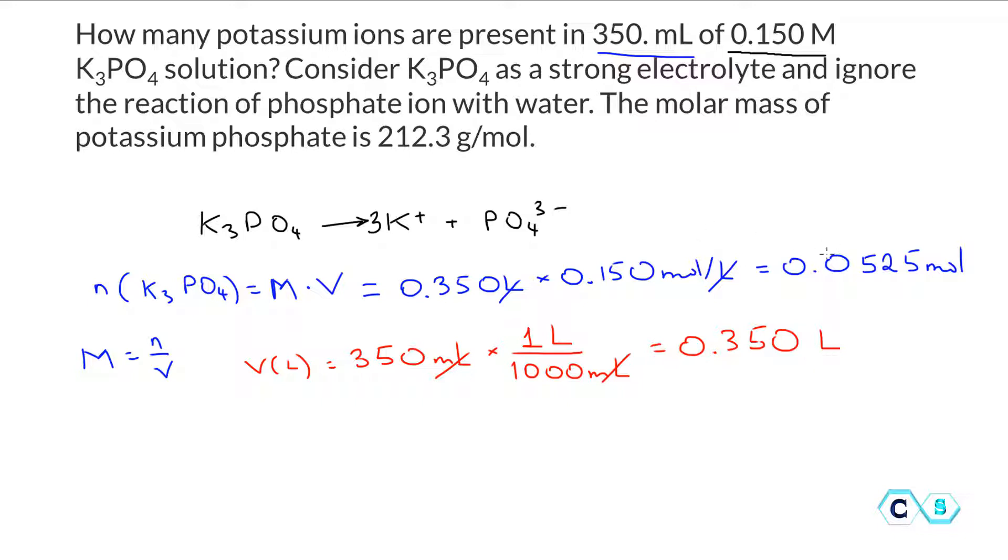Now we have the moles of potassium phosphate, so let's put 0.0525 moles. Based on this we can find how many moles of potassium and phosphate ions we have. The mole ratio is one to three. Every one mole of potassium phosphate produces three moles of potassium ions.